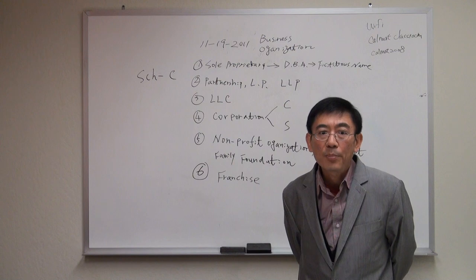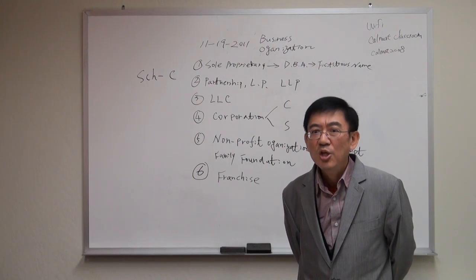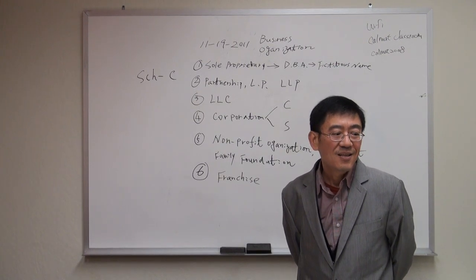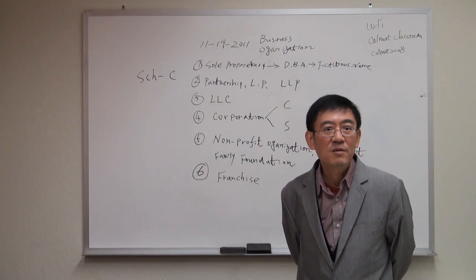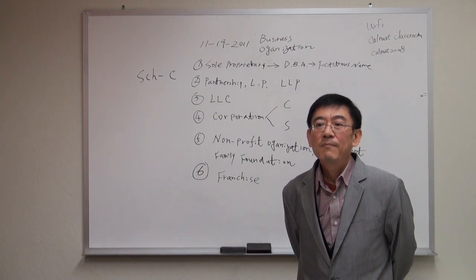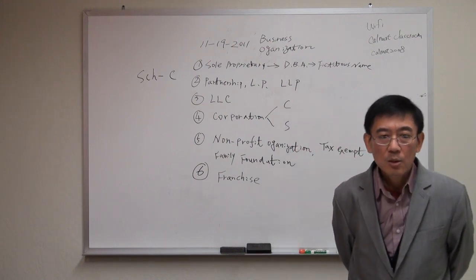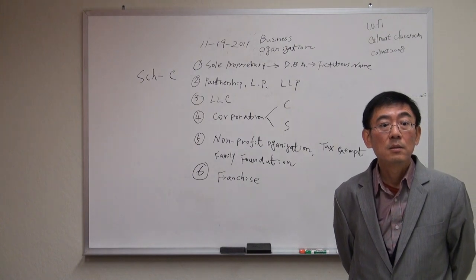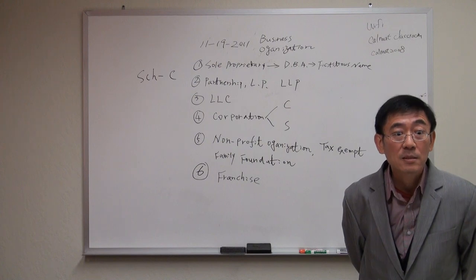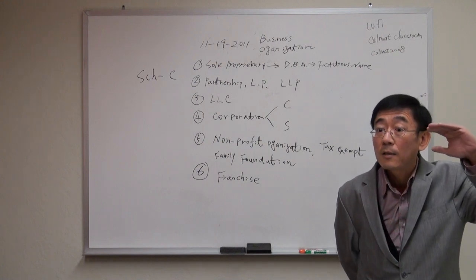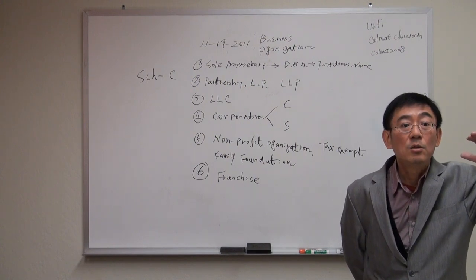The tax form for S corporation is called 1120-S. The major difference is not the S. This kind of joke - people waiting for iPhone 5 when it's actually iPhone 4S. Anyway, the major difference is not S. The major difference is 1120 you need to pay tax. That's why C corporation is called double tax.